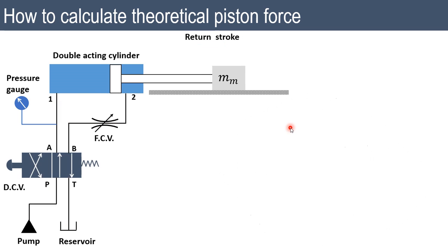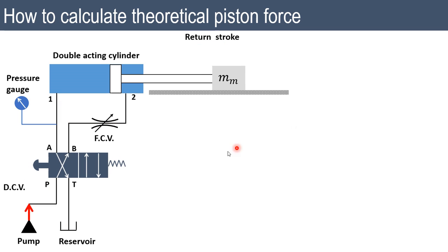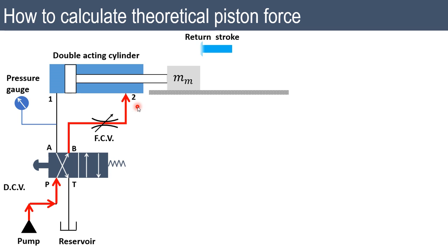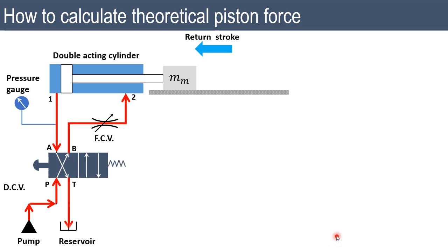If we push the push button we get the left envelope mode, where fluid enters on the rod side of the cylinder and causes retraction of the piston. The fluid from the other side goes to the reservoir. We need to determine the piston force required during the return stroke, along with the static and sliding friction forces.